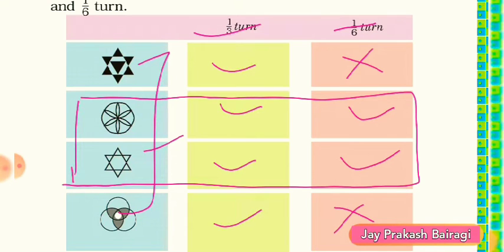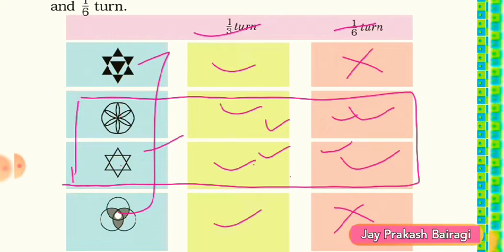You can see that the second and third pictures were looking the same in one third turn and also in one sixth turn. So here you can see that a figure which looks the same on one sixth turn will also look the same on one third turn, which is the same as two one sixth turns.